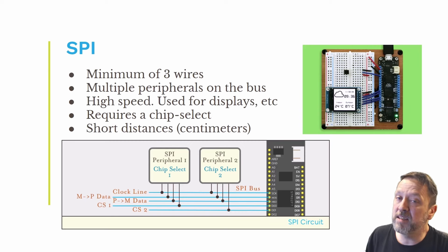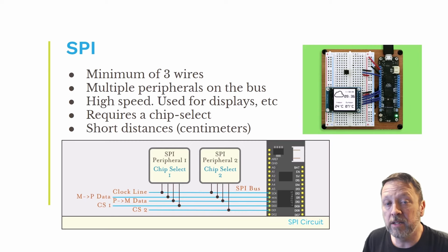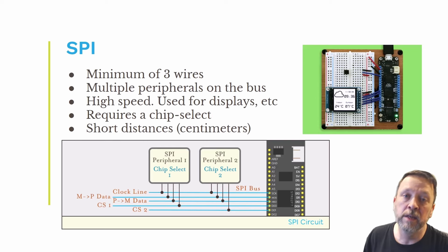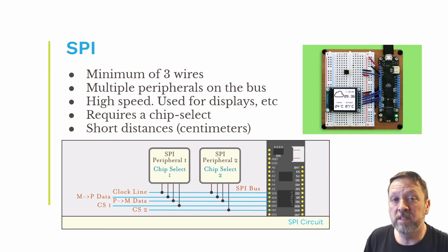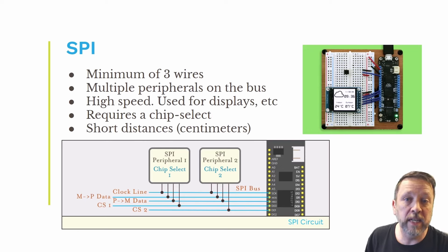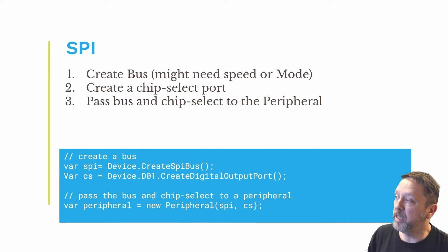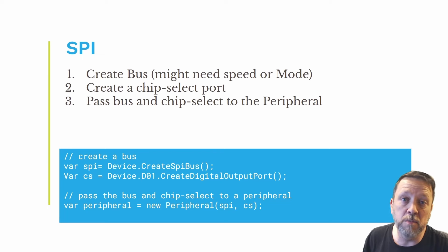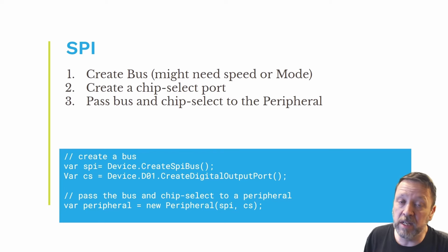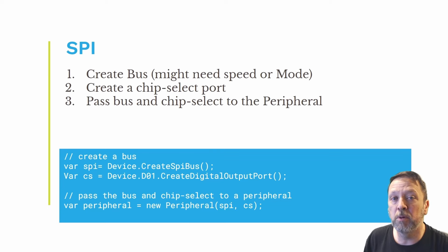SPI is a little bit more complex. It's got a minimum of three wires, plus it has another line called a chip select that you drive low when you want to select it. That way you can again have multiple devices on the bus and select which one you're talking to at any given time. In order to create that peripheral, you have to pass it the bus and the chip select line you're going to use. This is typically short distance, something inside the enclosure with your platform hardware. You create the bus — in some cases you might need to provide the speed or the mode, though most of the drivers in Meadow Foundation already know the speed and mode internally. Then you provide that bus and the chip select port to the peripheral when you construct it.